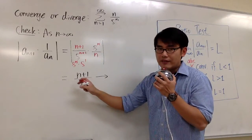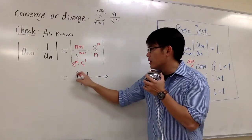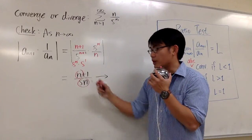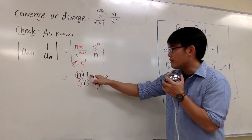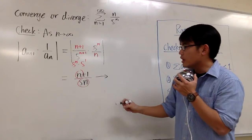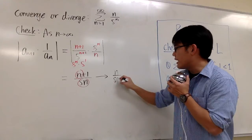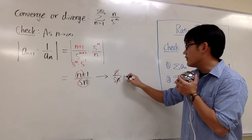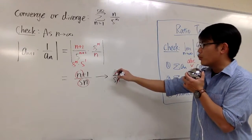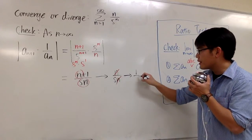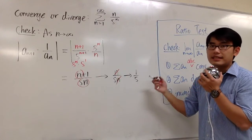When we have n plus 1 over phi n, n matters on the top, and we only have phi n on the bottom. The plus 1 doesn't matter. So this will approach to n over phi n. And of course the n can be cancelled, therefore we know this approaches to 1 over phi. And that's the limit, that's the L.